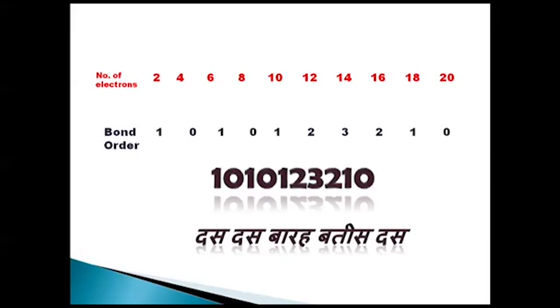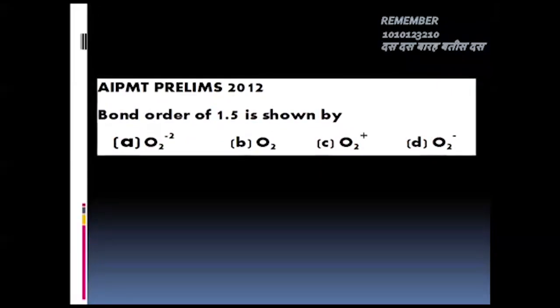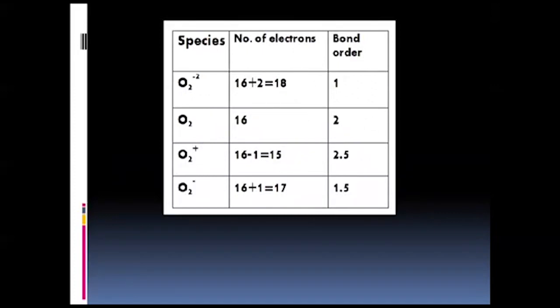Let's try one question on this trick. A question from AIPMT 2012 asks: which species shows a bond order of 1.5 — O2²⁻, O2, O2⁺, or O2⁻? First, let's write the total number of electrons. Oxygen has 8 electrons, so O2 has 16. O2²⁻ has 16 + 2 = 18 electrons. O2⁺ has 16 − 1 = 15 electrons. O2⁻ has 16 + 1 = 17 electrons.